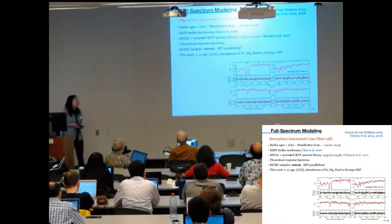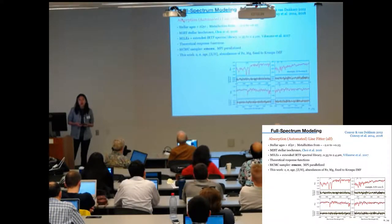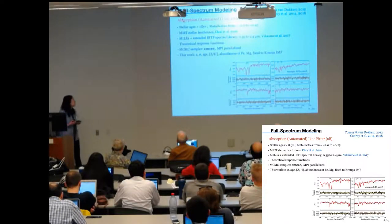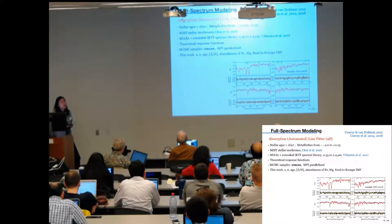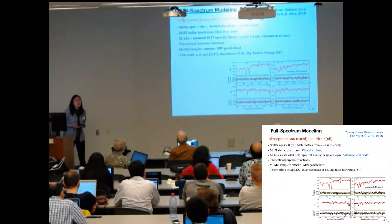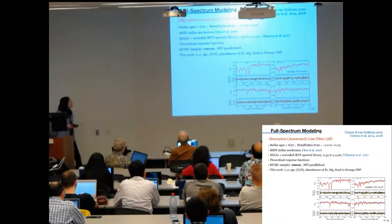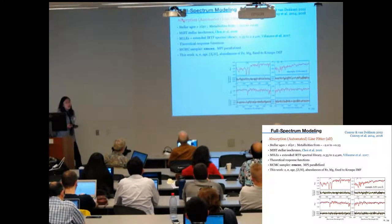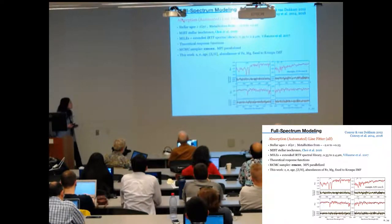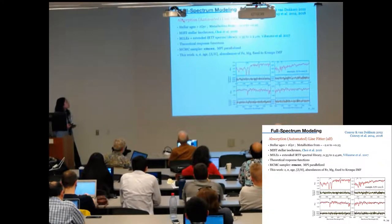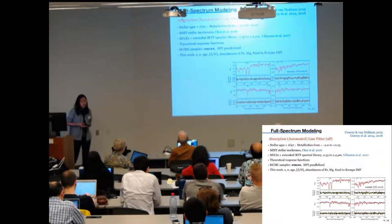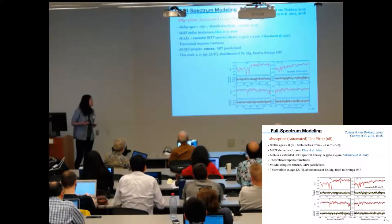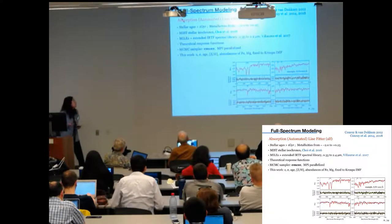In order to do that, we use a full-spectral absorption line fitter, which is designed to model the stellar population with ages older than one gigayear and metallicity from minus 2 to 0.25. The code adopts the MIST stellar isochrone and uses a new stellar library with very wide wavelength coverage. And the parameter space is explored by an MCMC algorithm.